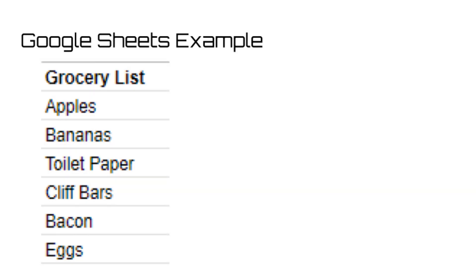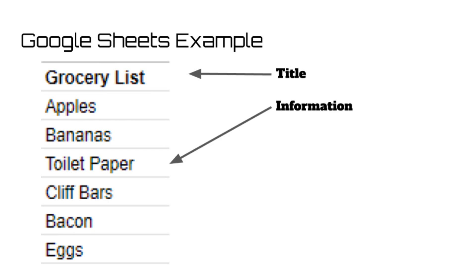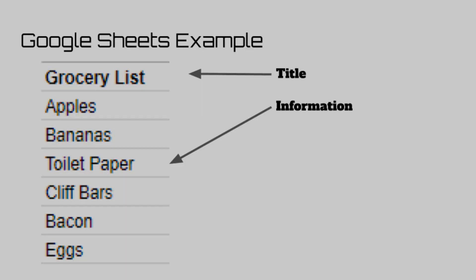Think of arrays as a column in Excel or Google Sheets. You have the title at the top, and then below it are a bunch of bits of information which all relate to the title. Arrays are super useful when using searching algorithms, because programmers have developed methods of breaking down and using arrays to find specific information in arrays full of thousands of different variables.